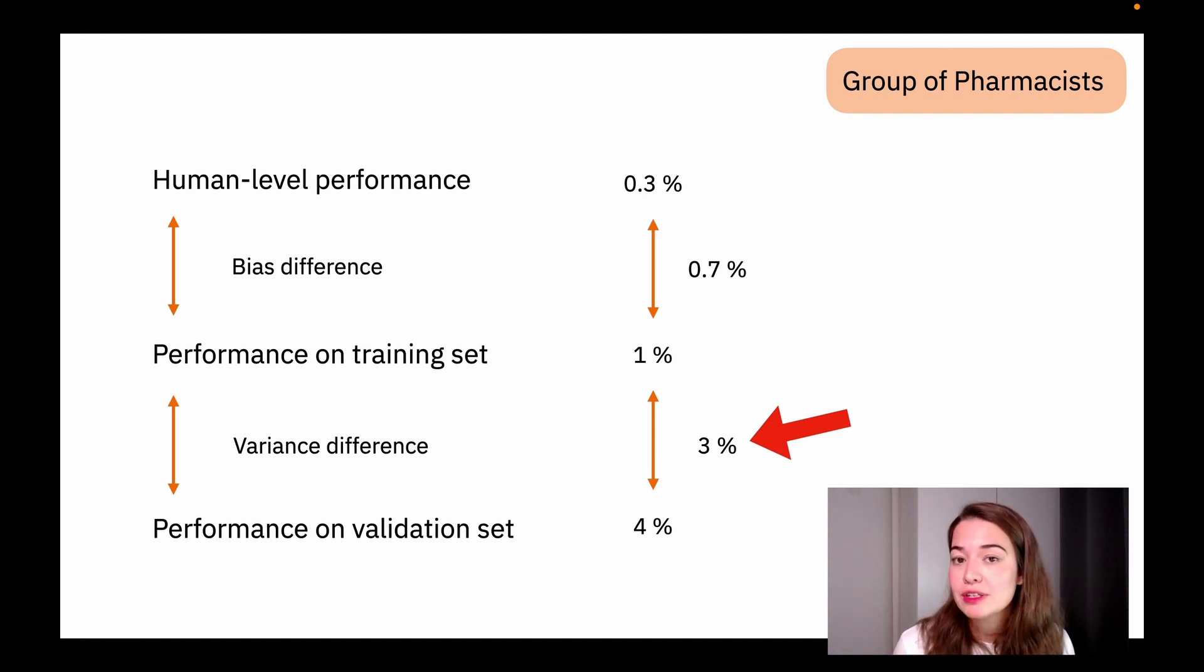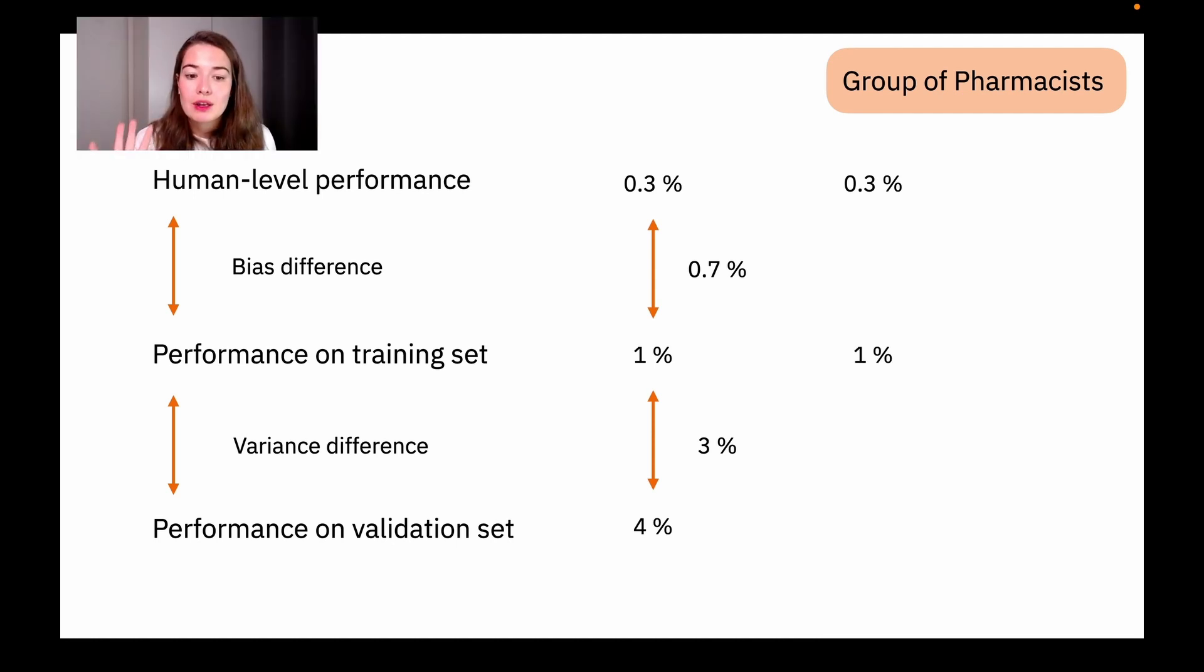But what if our model was a bit more different? Let's say we are still trying to achieve 0.3% based on group of pharmacists' performance. Our training set performance is again 1, but our validation performance, our performance on the validation set is 1.2.